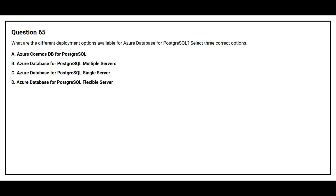Question 65: What are the different deployment options available for Azure Database for PostgreSQL? Select three correct options. Option A, Azure Cosmos DB for PostgreSQL. Option B, Azure Database for PostgreSQL multiple servers. Option C, Azure Database for PostgreSQL single server. Option D, Azure Database for PostgreSQL flexible server. The correct answers are Option A, Azure Cosmos DB for PostgreSQL; Option C, Azure Database for PostgreSQL single server; and Option D, Azure Database for PostgreSQL flexible server.